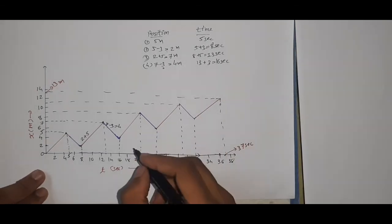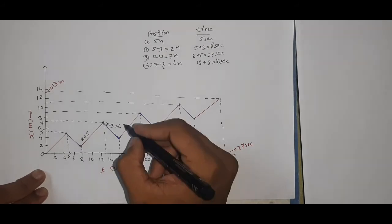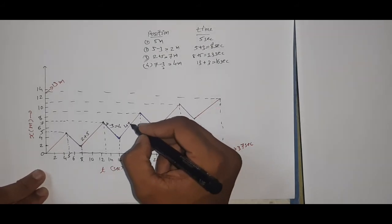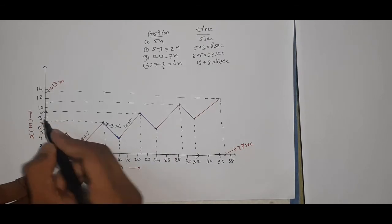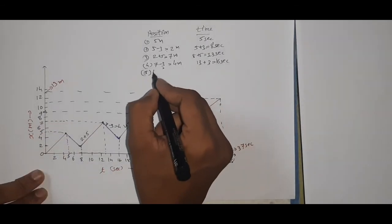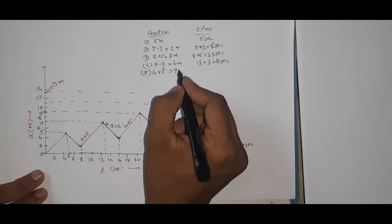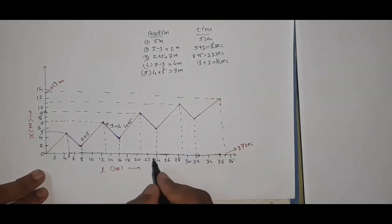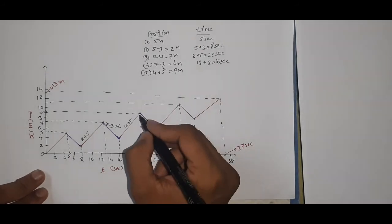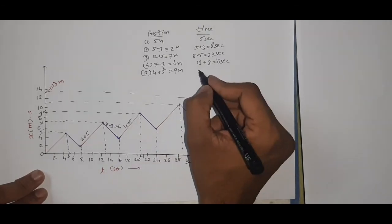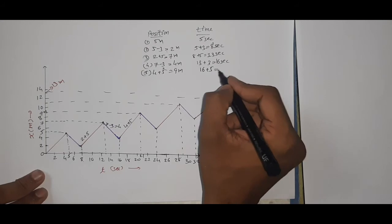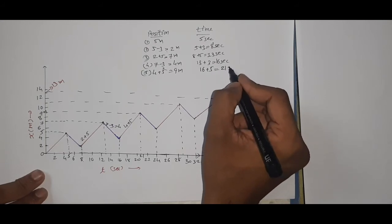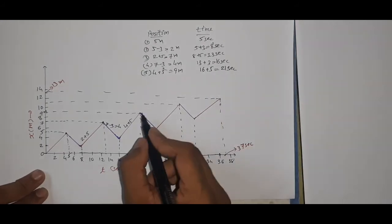Continue. We take 5 steps forward. 4 plus 5 is 9 meters. Time is 16 plus 5, which is 21 seconds. So at 21 seconds, the position is 9 meters.